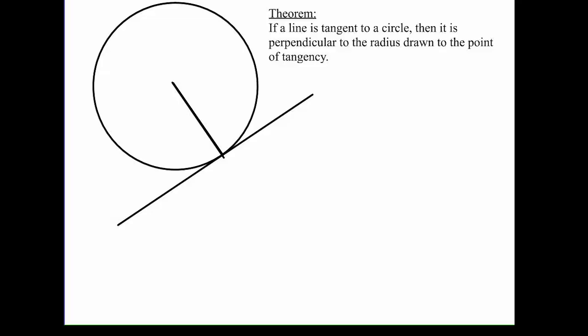Hi everybody, this is Ms. Borras and I'm going to teach you one of our circle theorems. Our first one is: if a line is tangent to a circle, then it is perpendicular to the radius drawn to the point of tangency. A couple vocabulary words from last week — this is our point of tangency, the only point where this tangent line intersects the circle.